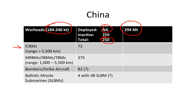China does have 72 ICBMs and a very large number of medium-range missiles, but most if not all of these will not be dedicated to a nuclear role at this time. They do have a large bomber fleet, but it's highly questionable as to whether or not that bomber fleet is designed to carry nuclear weapons. And then the big question surrounds China's ballistic missile submarine fleet.